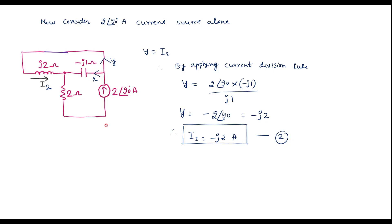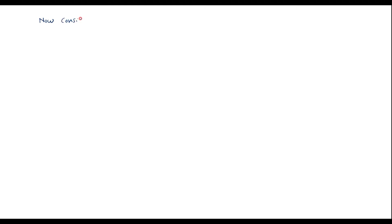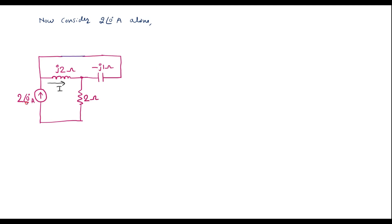In the third case, consider the other current source — the 2 amp source alone. Open the 2∠90° current source and short the voltage source. The circuit looks like this. Here we are considering the 2 amp source alone; the other current source is opened and the voltage source is shorted. Part of the current will flow through one branch — I will call this current I3 — and part will flow through the other branch, which I will call I4. We need to find I3.